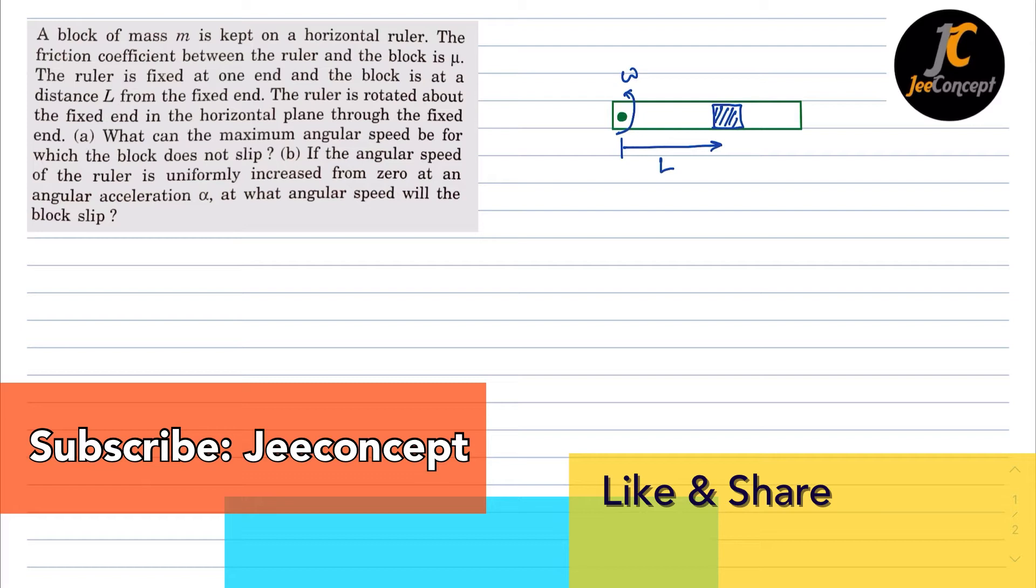And part b, if the angular speed of the ruler is uniformly increased from zero at an angular acceleration alpha, at what angular speed will the block slip?